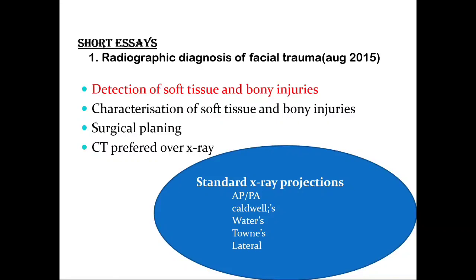Detection of soft tissue and bone injuries is indicated through MRI scans, and CT is more preferred over conventional radiographs. Standard radiographic projections used for facial trauma include the anteroposterior or posteroanterior views, Caldwell's and Waters' projections for indicating paranasal sinuses involved in fractures, Towne's projection, and the lateral projection for identifying mid-third fractures. With this, we conclude the oral medicine and radiology discussion of the question papers. Thank you for your kind listening.